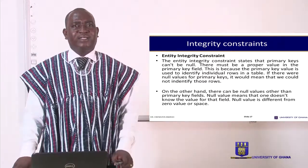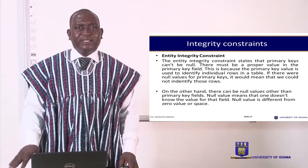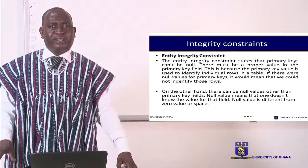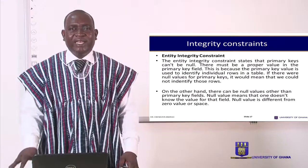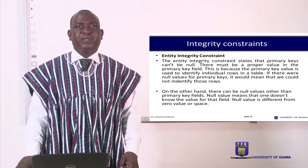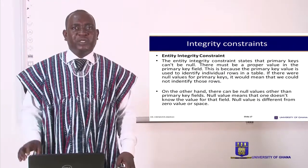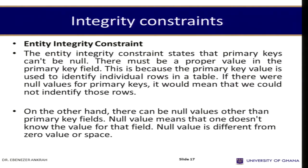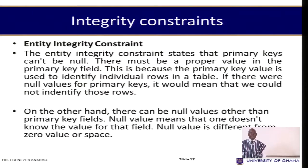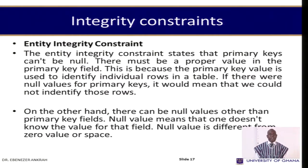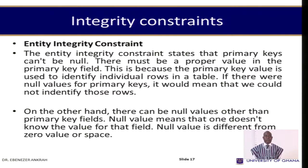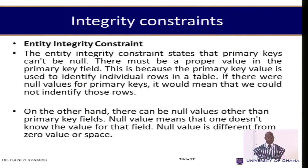The entity integrity constraint states that primary keys cannot be null. For any table or relation, the primary key must have a value. There must be a proper value in the primary key field because the primary key value is used to identify individual rows in the table. If there were null values for primary keys, we could not have any identifier for those rows. Therefore, the primary key can never be null — there must always be something to identify.